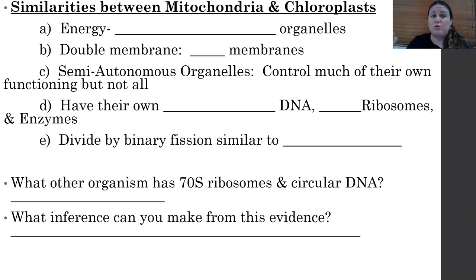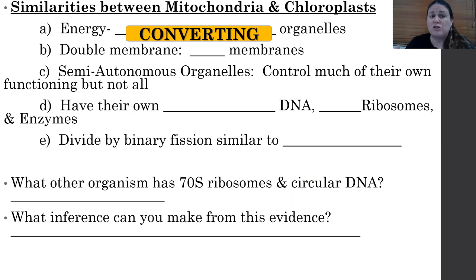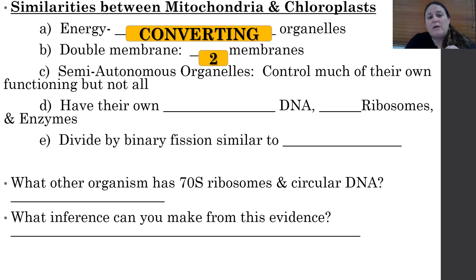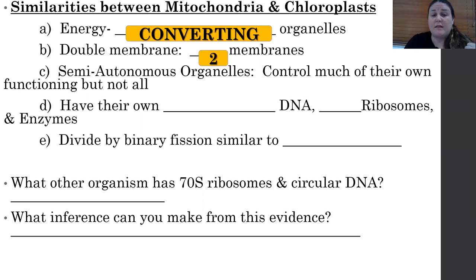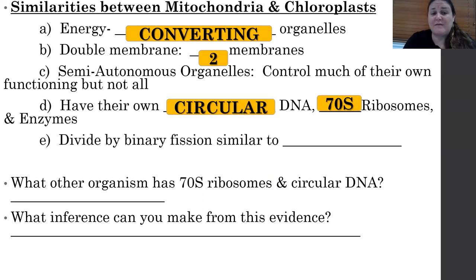There are similarities between mitochondria and chloroplasts in structure and function. They're both energy converting organelles, both have double membranes — two phospholipid bilayers. They're known as semi-autonomous organelles, meaning they control a lot of their own functioning but not all. They can make their own proteins and enzymes, and even reproduce on their own, but they can't survive independently. They both have circular DNA, 70S ribosomes, and their own enzymes.